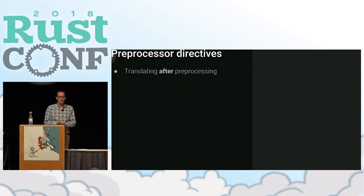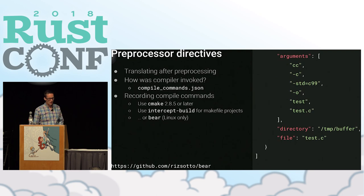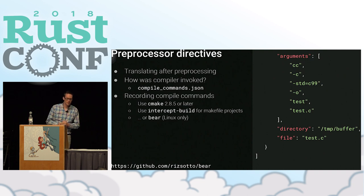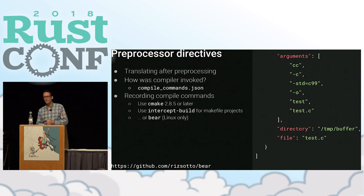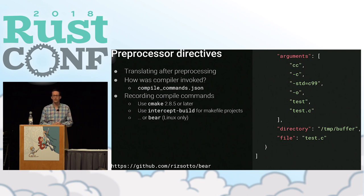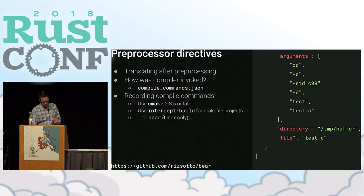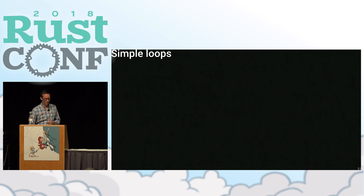We do our transpiling after preprocessing, which means we need to know how to invoke the compiler with the right flags for a given platform. This is a problem IDEs and analysis tools also have, and there's an existing solution: Clang reads a JSON compile commands file. It's very simple — it just gives the compiler arguments and build context. You can get this file automatically. If you're using CMake, you just add another flag. If not, Clang comes with a script called intercept-build for makefile projects on Linux and macOS, or you can use Bear on Linux.